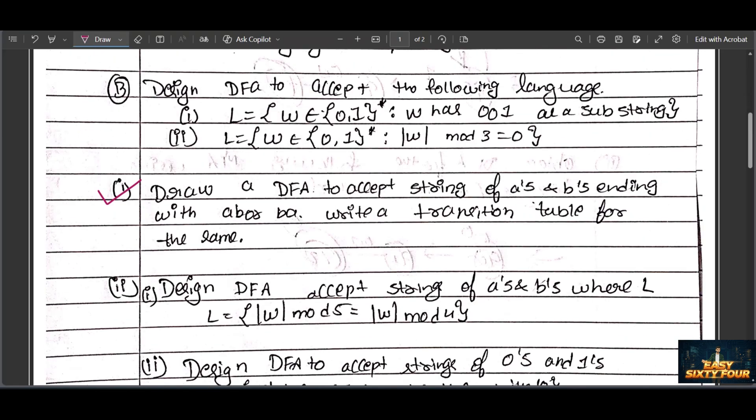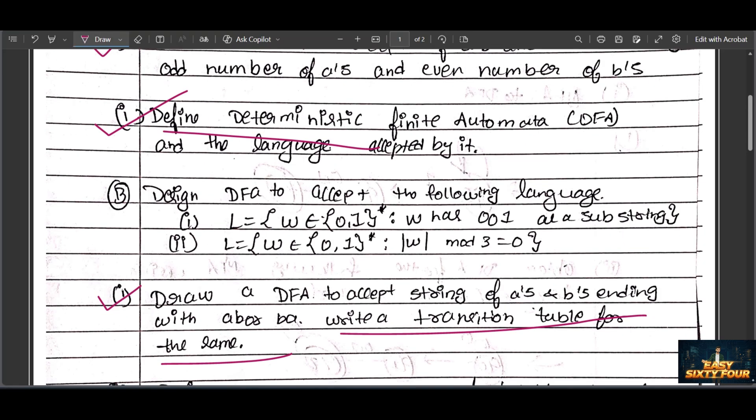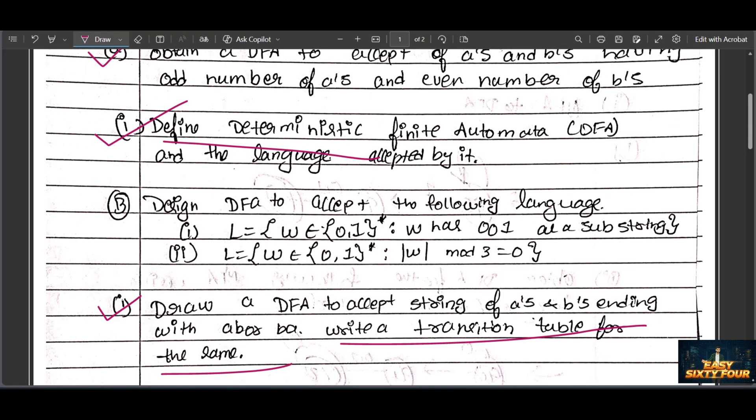Write the transition table. You all studied the easy method - NFA into DFA, DFA into NFA. This is a basic topic in your college. After that, let's go to Part B. In Part B, I have given three questions.